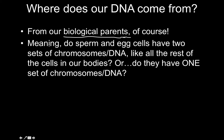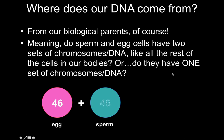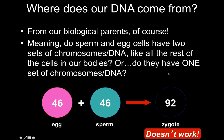Do sperm and egg cells have two sets of chromosomes like the rest of the cells in our body? We just said all the cells in our body have two sets of chromosomes — so do sperm and egg cells have all those sets as well, or do they have one set? Let's sort this out. If an egg had 46 chromosomes and a sperm had 46 chromosomes, and they made a zygote, 46 plus 46 is 92 — that doesn't work.